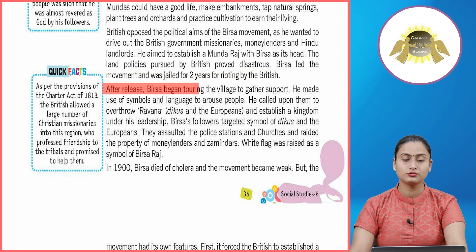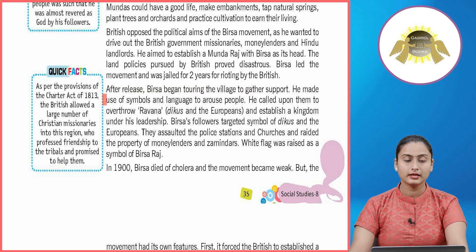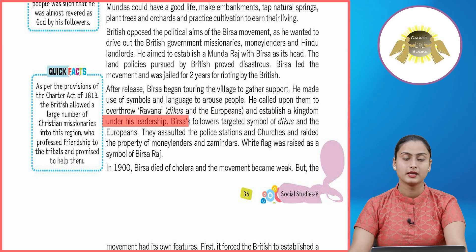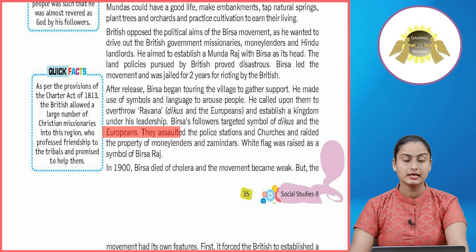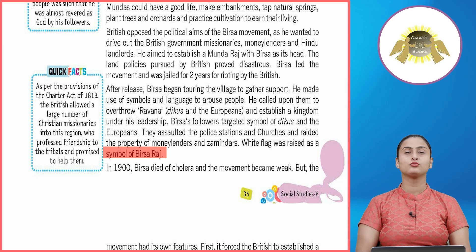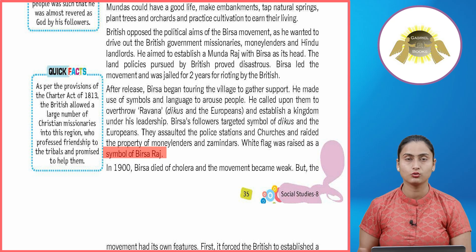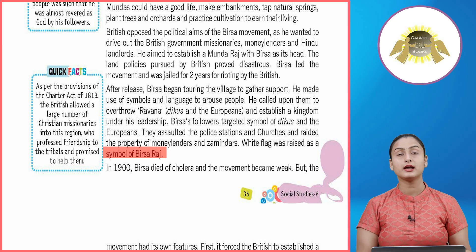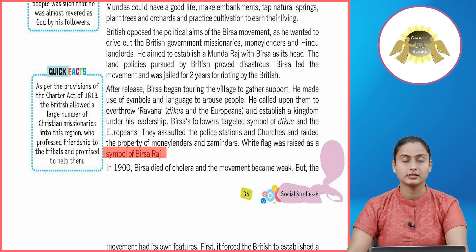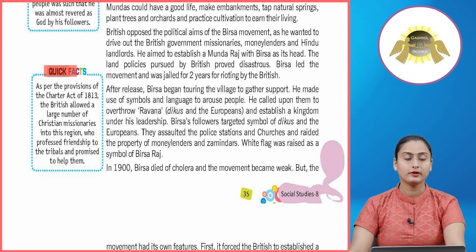After his release, Birsa began touring villages to gather support. He made use of symbols and language to arouse people, calling upon them to overthrow the dikus and Europeans and establish a kingdom under his leadership. Birsa's followers targeted symbols of the dikus and Europeans — they assaulted police stations and churches and raided the property of moneylenders and zamindars. A white flag was raised as a symbol of Birsa Raj.